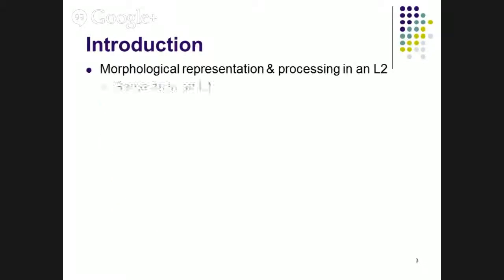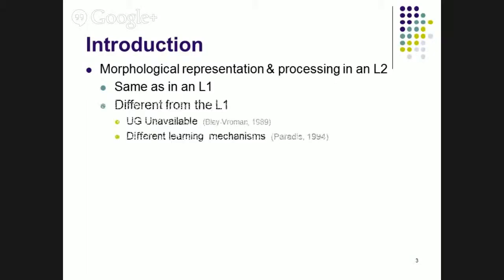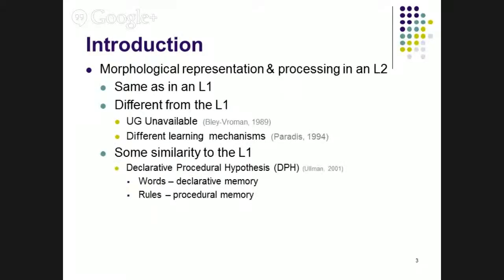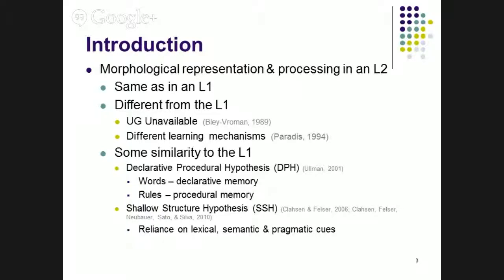What about second language speakers? You could say, for instance, that they represent and process morphology in the same way as native speakers, in which case you could adopt any of the models previously presented or others that I left out. You could postulate that representation and processing in morphology is completely different from the L1, either because the universal grammar is unavailable or because L1 and L2 acquisition occur by way of different learning mechanisms. Or you could posit a partial overlap, such as, for instance, the declarative procedural hypothesis, which posits that words and rules is a valid idea for native speakers. Words reside in the declarative memory, are explicitly learned, rules in the procedural memory. But the procedural memory is subject to maturational constraints, so that L2 speakers must rely on storage, on words, for learning all verbal forms, at least in the early parts of acquisition. Then there's also the shallow structure hypothesis, which postulates that L2 speakers are overly reliant on lexical and pragmatic cues for constructing representations of the speech they process. So this would also posit over-reliance on explicitly memorized morphological forms.